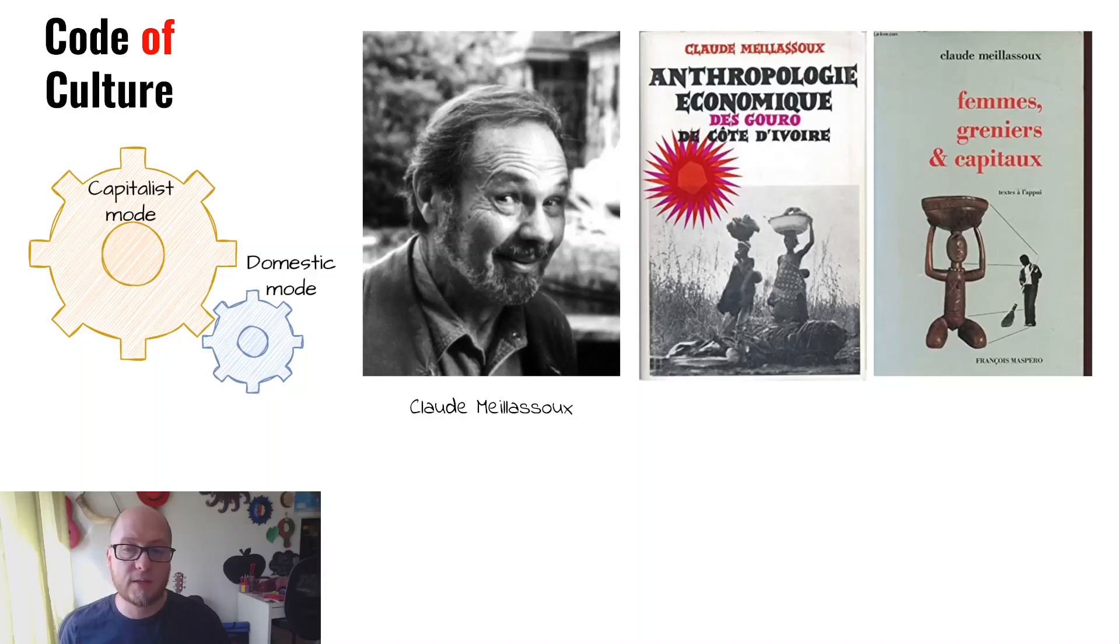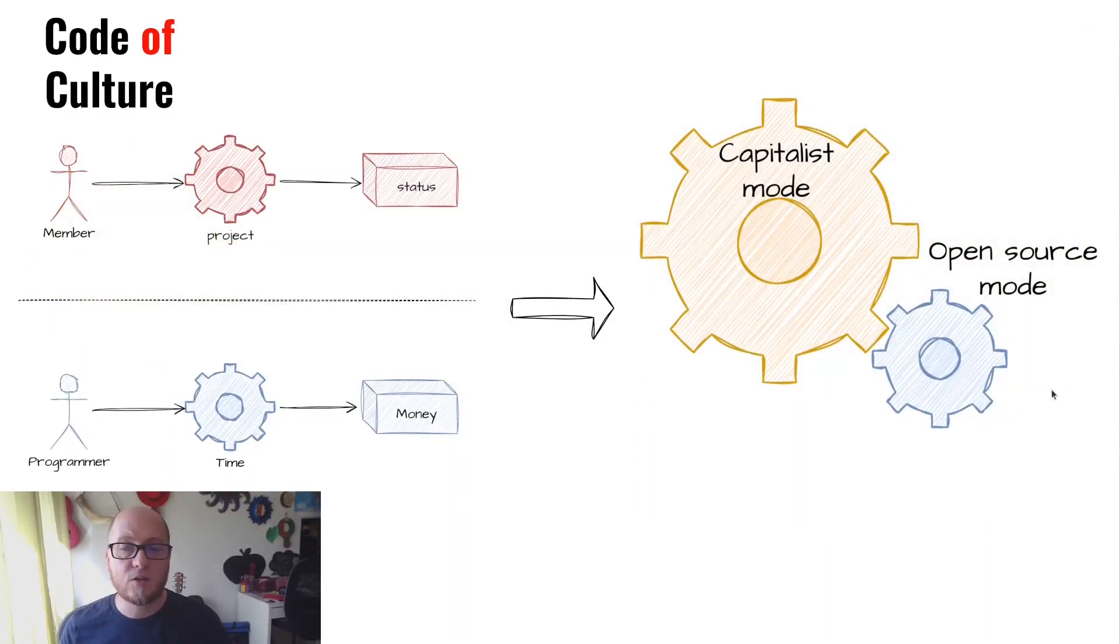When we use these two lenses to explore the technology market, we can see how companies work on a capitalist mode, and use the open source mode to create and maintain code that is not valuable for them, in a quite similar way that the domestic mode in Méliasseux takes care for free of the workers that cannot work anymore in capitalist factories. This highlights the complex and often contradictory relationship between open source and capitalism, and raises an important question about the future of collaborative production in capitalist societies.